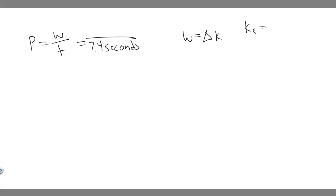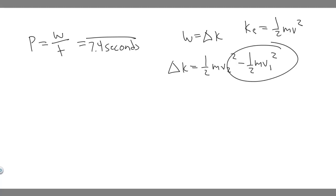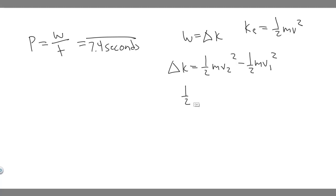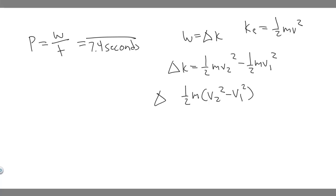The formula for kinetic energy is ½mv². The change in kinetic energy is ½mv₂² minus ½mv₁² — kinetic energy at the end minus kinetic energy at the beginning. We can factor this as ½m(v₂² − v₁²). This change in kinetic energy equals the work, so we divide it by 7.4 seconds to get the power.